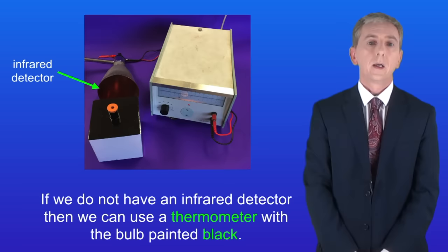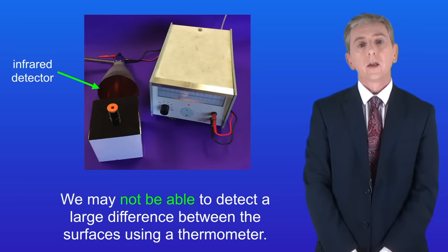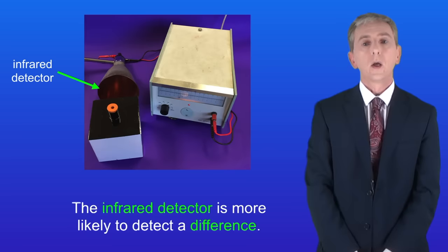If we don't have an infrared detector, we can use a thermometer with the bulb painted black. However, the resolution of the thermometer is less than the infrared detector. The resolution is the smallest change that can be detected, so we may not be able to detect a large difference between the surfaces using a thermometer, whereas the infrared detector is more likely to detect a difference.